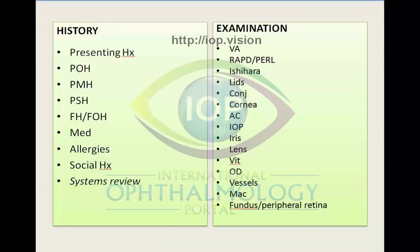As we know from our medical training, in history taking we go through presenting history, previous ocular history, past medical history, past surgical history, family history, medication, allergies, social history, and systems review. On examination you can see the list from visual acuity down to anterior segment, intraocular pressure, and the posterior segment of the eye.